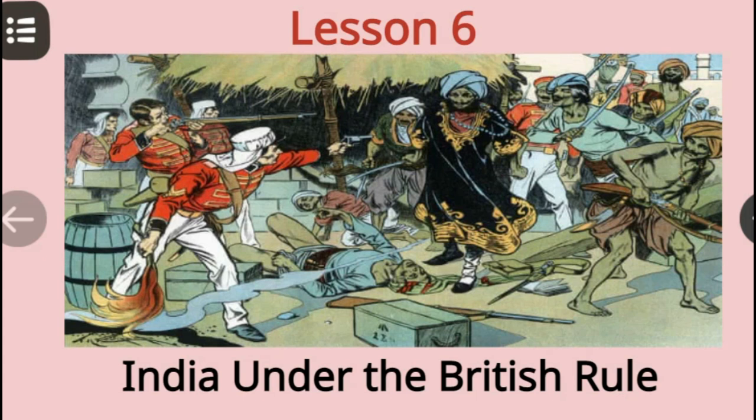Dear children, as a result of the revolt of 1857, the Government of India Act was introduced which abolished the rule of the British East India Company and marked the beginning of British Raj, giving powers to the British government to rule India directly through representatives.